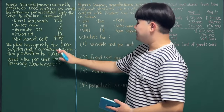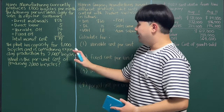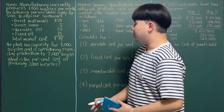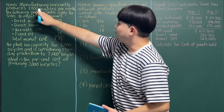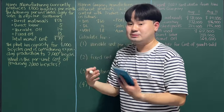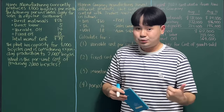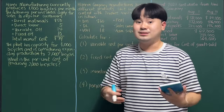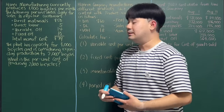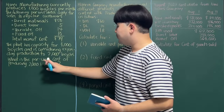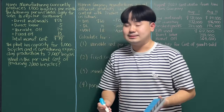The plant has a capacity of 3,000 bicycles and is considering expanding production to 2,000 bicycles — starting from 1,000 and expanding to 2,000. They can do that because the total plant capacity can hold up to 3,000 bicycles. The question is: what is the per unit cost of producing 2,000 bicycles?